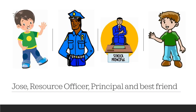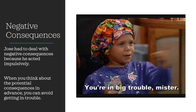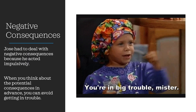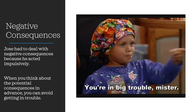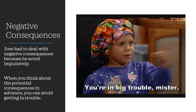What are the consequences of Jose's impulsive behavior? He was suspended from school, his best friend can't hang out with him, and he will receive a zero on the test along with other work he misses. He has some very negative consequences. Jose had to deal with these because he acted impulsively. When you think about potential consequences in advance, you can avoid getting in trouble.